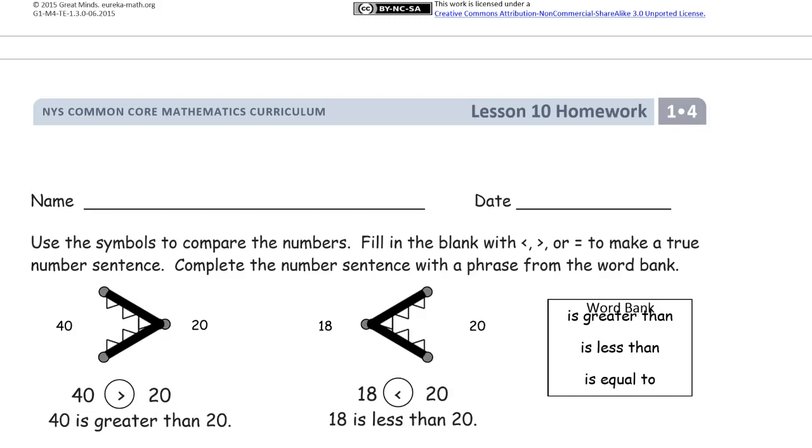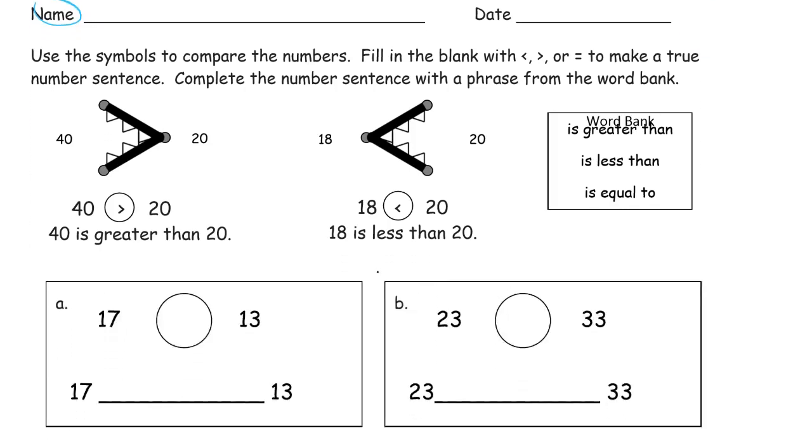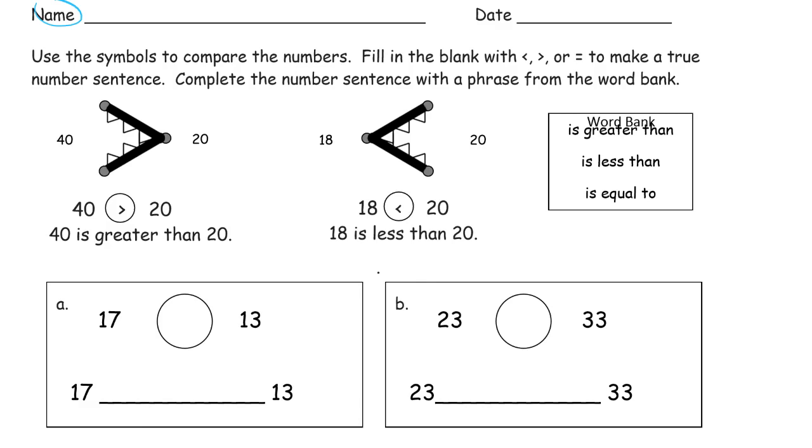Welcome to the homework for lesson 10. This is module 4 first grade. Get your name on right here. We're using the symbols to compare the numbers. Fill in the blank with less than, greater than, or equal to to make a true number sentence. Complete the number sentence with a phrase from the word bank. You can see how to spell greater than, is less than, and here's how you spell equal. You just look back there to see how to write it.